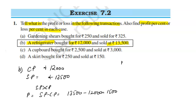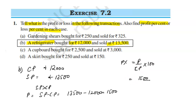Now we have to find the profit percentage. The formula is: Profit upon CP into 100. So profit percentage = 1500 upon 12,000 into 100.